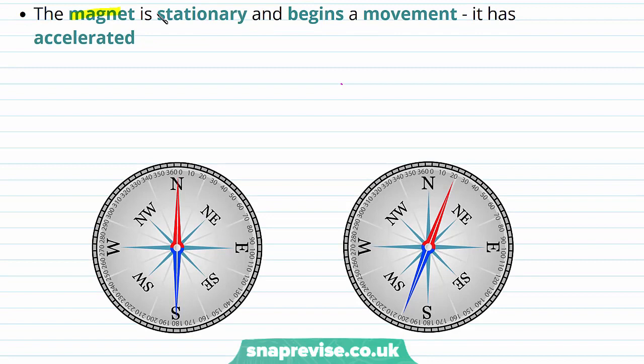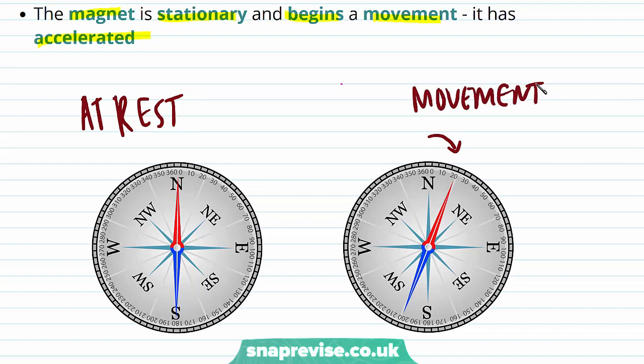We see that the magnet was once stationary and then begins a movement, so it has accelerated. At first the magnet is at rest and then it begins to move. And because the velocity of the magnet has changed, we therefore say that it has experienced an acceleration.